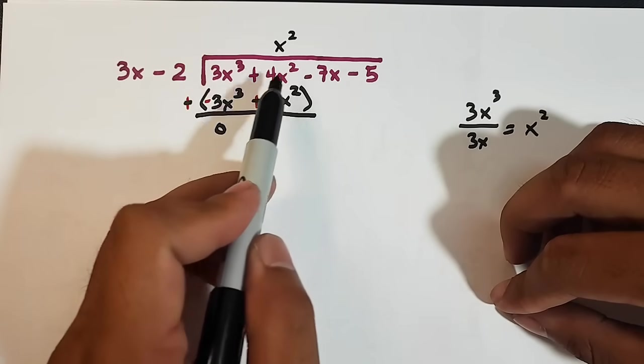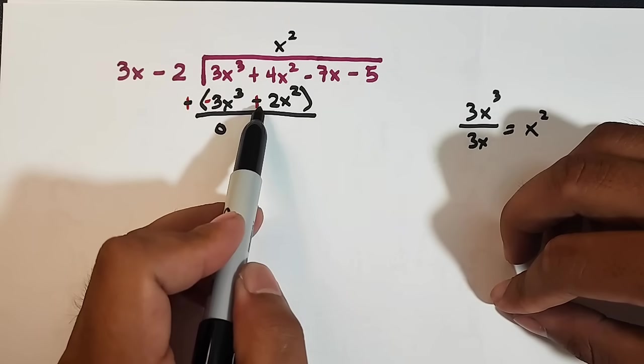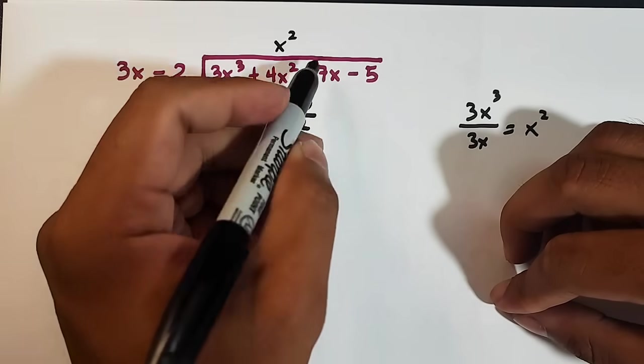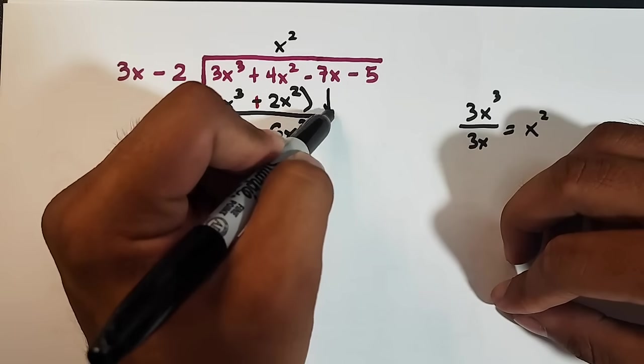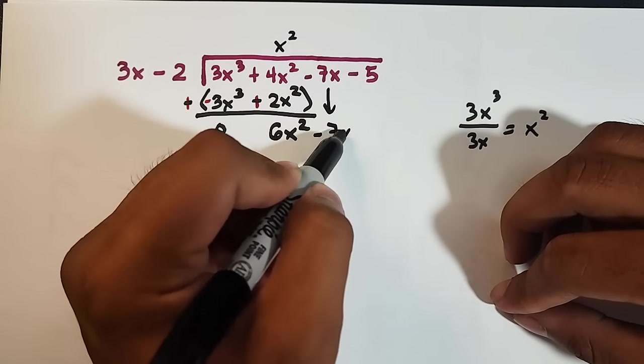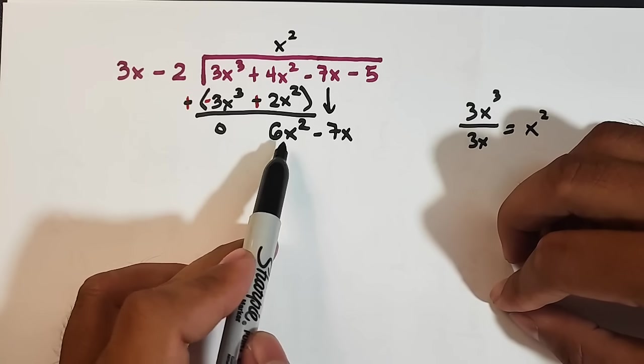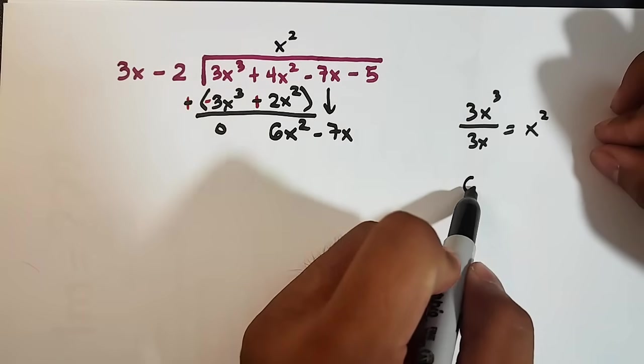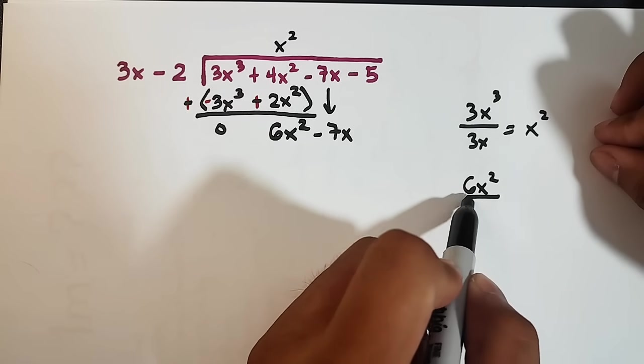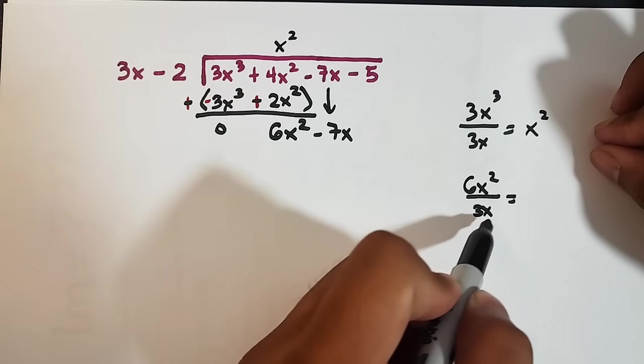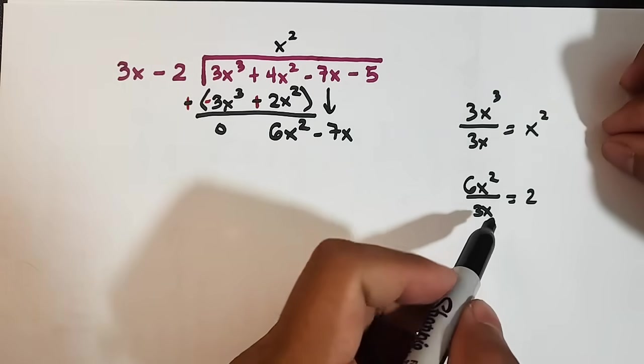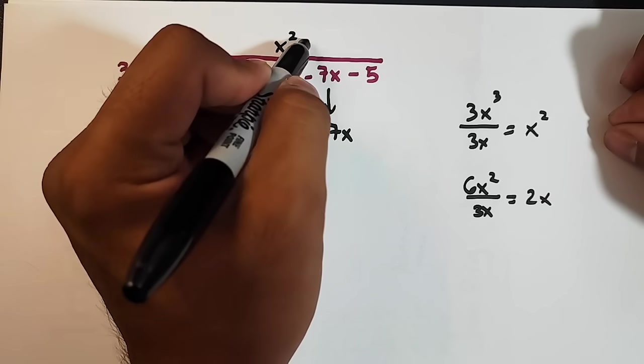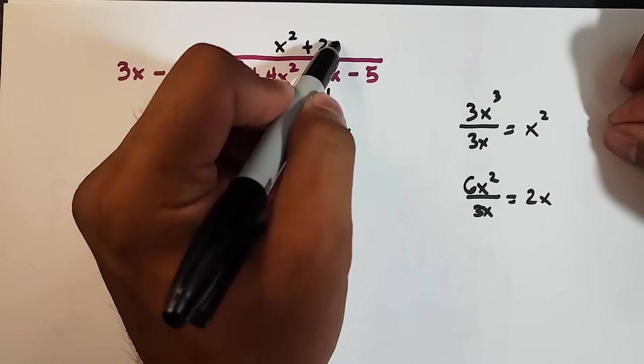4x squared plus positive 2x square. That is equal to 6x square. Then bring down. One at a time. Negative 7x. So now your new leading coefficient. 6x square divided by 3x. So 6x square divided by 3x. So 6 divided by 3 is 2. x square divided by x is x. So this is it. Place here plus 2x.